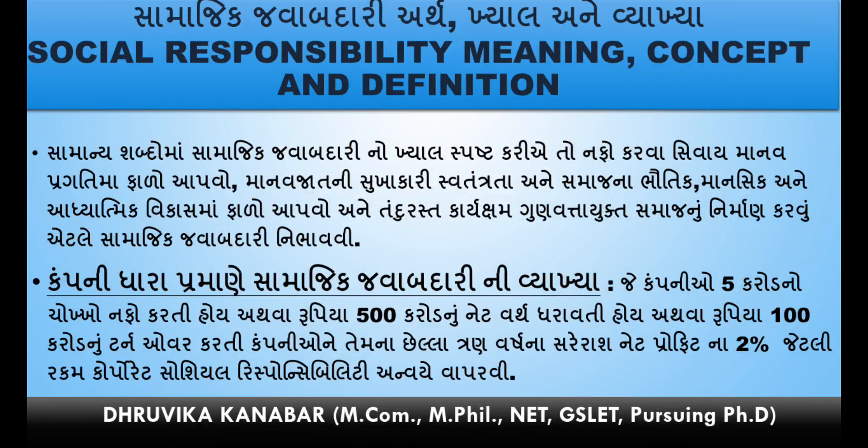Net worth: Total value of assets minus liabilities. Net profit means income minus expenditure. Turnover is basically the total amount of money, cash, and assets received by business for a particular period of time — i.e., total sales amount. These are the 3 key accounting terms: net profit, net worth, and turnover.